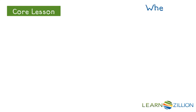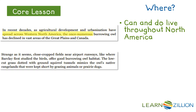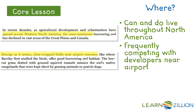Next, I'm going to ask where. Where is this a problem? In recent decades, agricultural development and urbanization have spread across western North America. The once-numerous burrowing owl has declined in vast areas of the Great Plains and Canada. They can and do live throughout North America, and more specifically, near people — airports or landfills are also key targets. So they're frequently competing with developers near airports and landfills in order to try to keep their habitat.